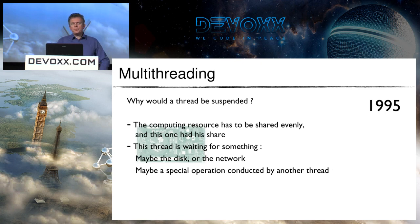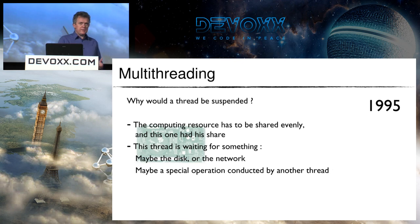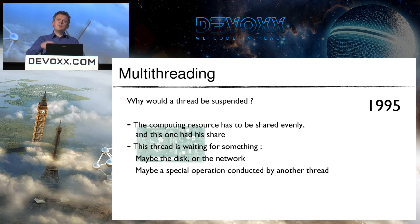Why would a thread be suspended? There are three reasons. First, the thread scheduler shares computing power evenly among all threads, so T1 may have had enough time and the scheduler suspends it. Second, a thread may be waiting for a slow resource — at that time the network was slow, the disk was slow, but memory was not slow; it was a fast resource, which is not the case anymore now. Third, a special operation being conducted on the CPU may require a thread to wait for another — basically synchronization.